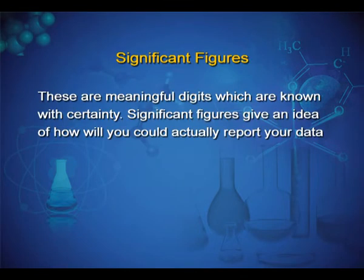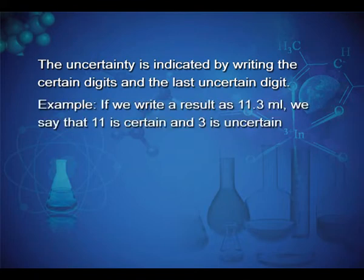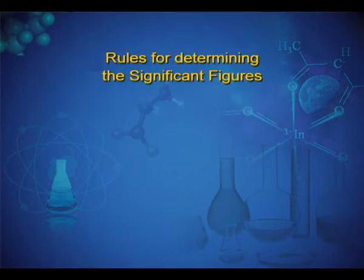Significant figures are meaningful digits which are known with certainty. Significant figures give an idea of how well you could actually report your data. The uncertainty is indicated by writing the certain digits and the last uncertain digit. Example: if we write a result as 11.3 ml, we say that 11 is certain and 3 is uncertain.